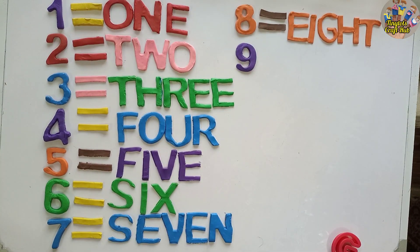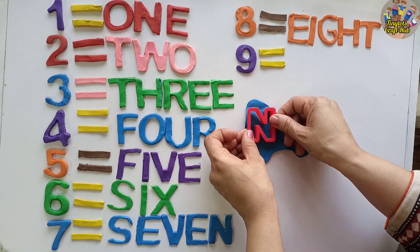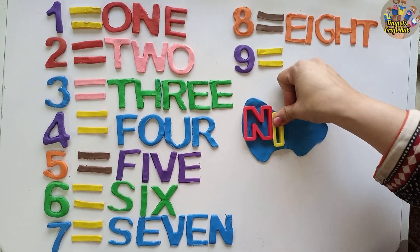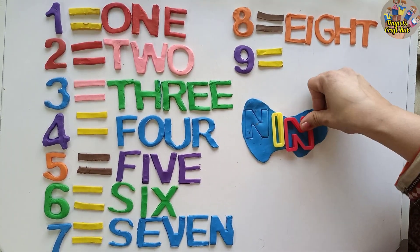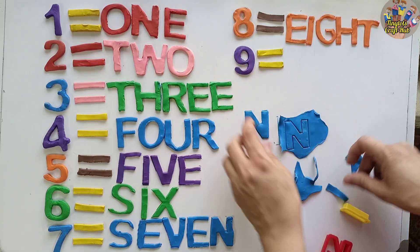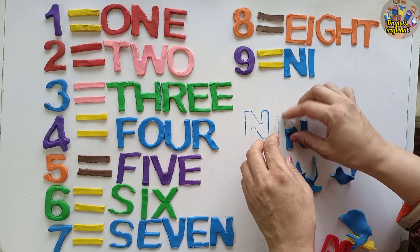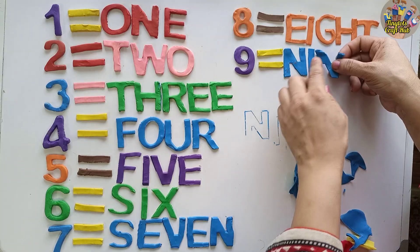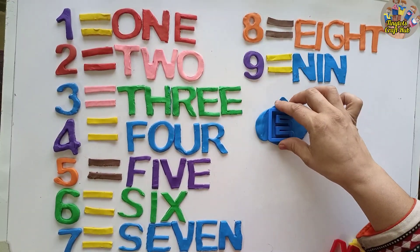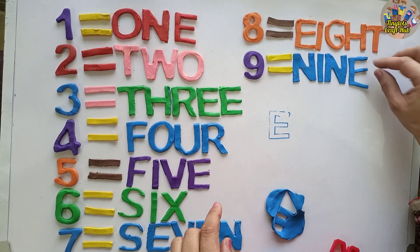After eight it's number nine. Let's see the spellings of nine. Can you guess the sound? N — yes, you're right! The first letter is N. N-I-N, and N comes two times. What will come in the end? The last letter is E. N-I-N-E, nine!